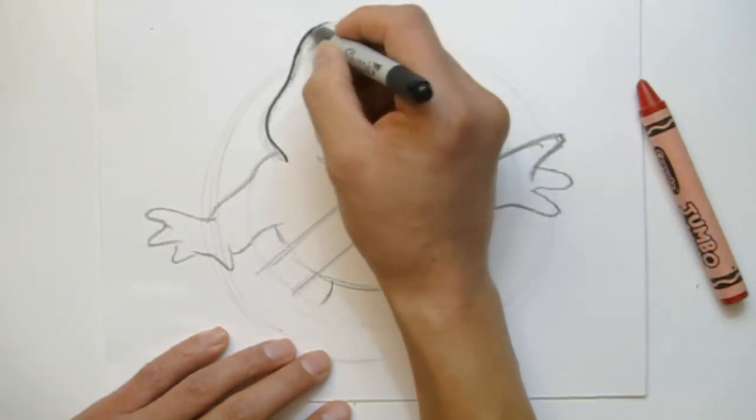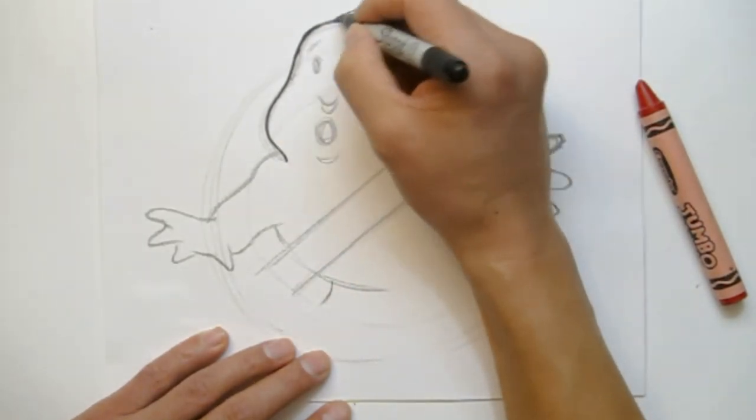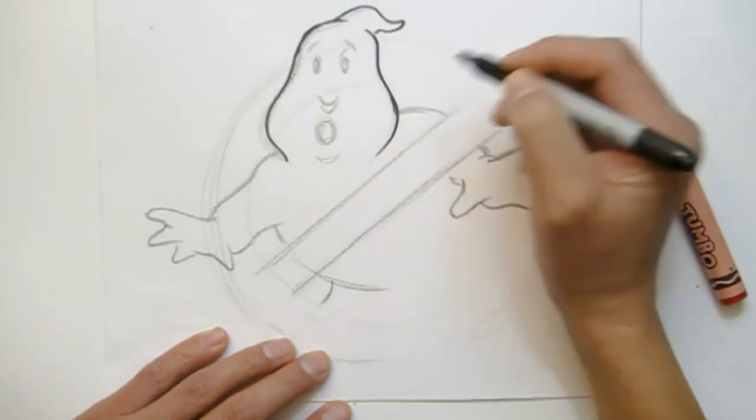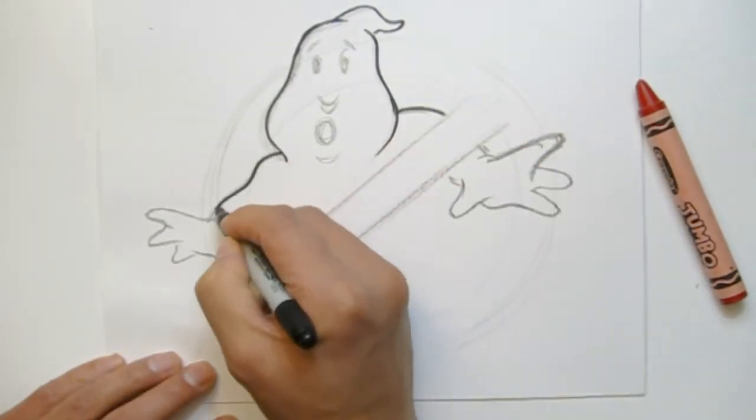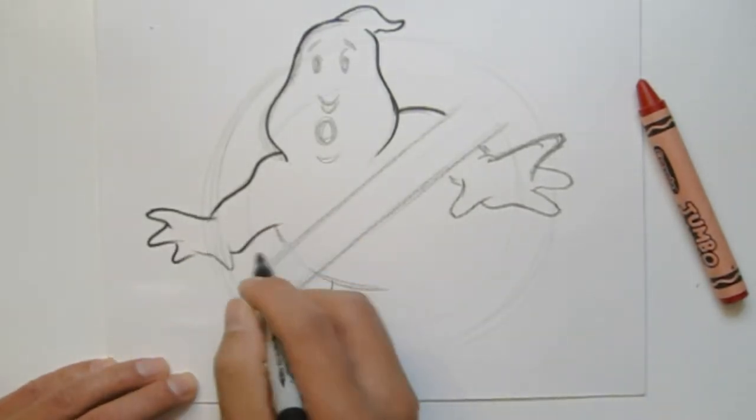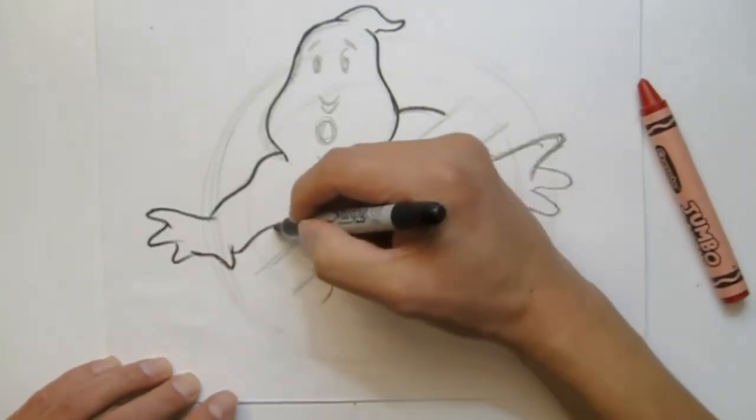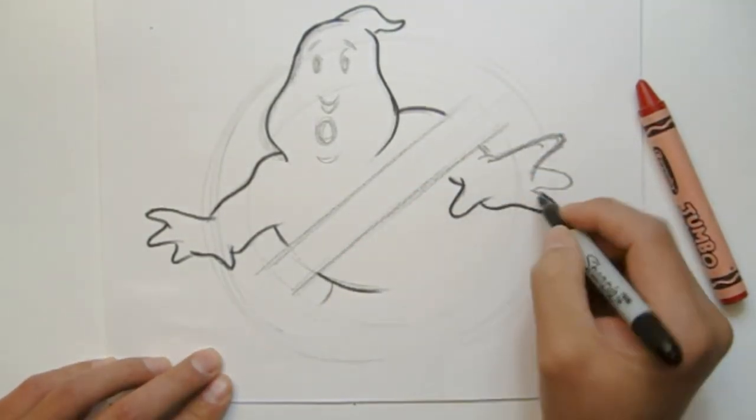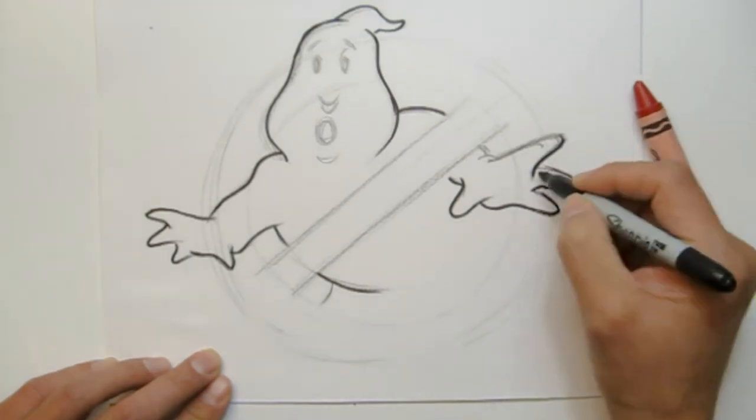So now I'm going to take a sharpie and go over the lines I roughed in. As you can see, I left the rest of the circle kind of roughly roughed in. Now I'm just going over with sharpie to clean it up. You can do the same, overlay with a piece of paper to get the perfect circle.